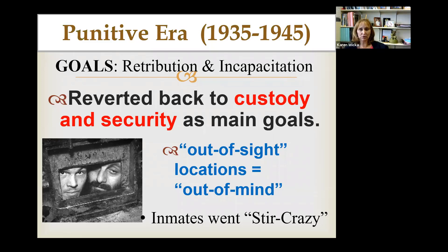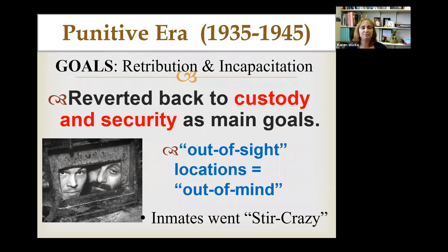The punitive era returned to the goal of incapacitation — just lock them up — and was much more focused on retribution: an eye for an eye. You commit a crime, we're going to punish you, throw you in jail, throw away the key, and not worry about you. It was a reversion back to custody, locking people up for security and keeping them away from the public — the 'out of sight, out of mind' mentality.